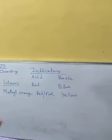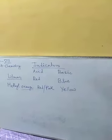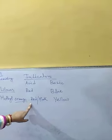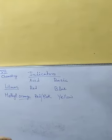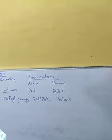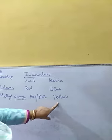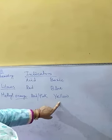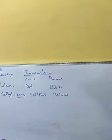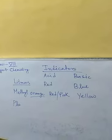Methyl orange's original color is orange, so if it is neutral its color will be orange. When we add a few drops of methyl orange in acid medium, it will change its color from orange to red or pink or rosy pink. If we add it in basic medium — like in sodium hydroxide or ammonium hydroxide — then from orange to yellow, this coloration we can observe.